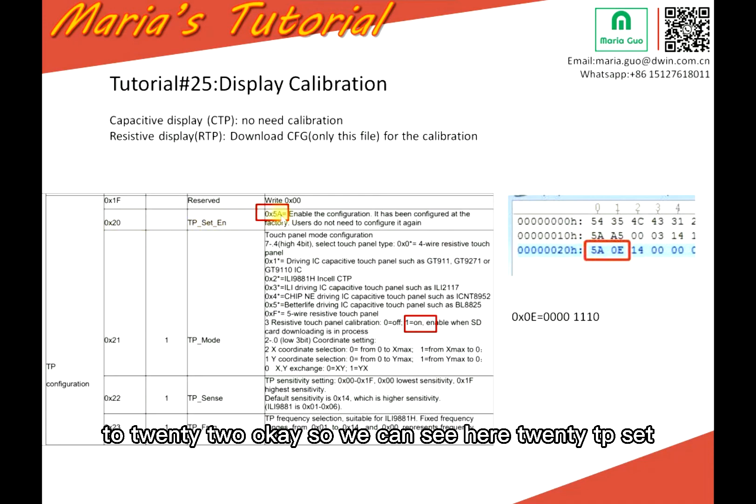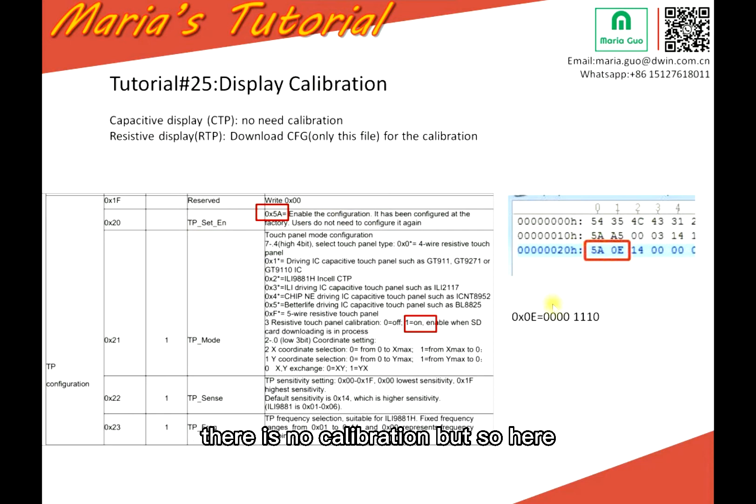Okay, so we can see here 20 TP set. 5A means enable the configuration. So if you write others, there is no calibration. But here, you need to write 5A.